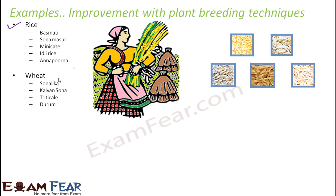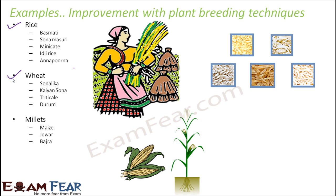Similarly with wheat, there are many different varieties like Sonanika, Kalyan Sona, Triticale, and Durum — these are all various varieties of wheat. With millets, there are different hybrid varieties of maize, Jowar, and Bajra, and they were all successfully developed by using plant breeding techniques. Also with sugarcane, plant breeding techniques helped significantly.